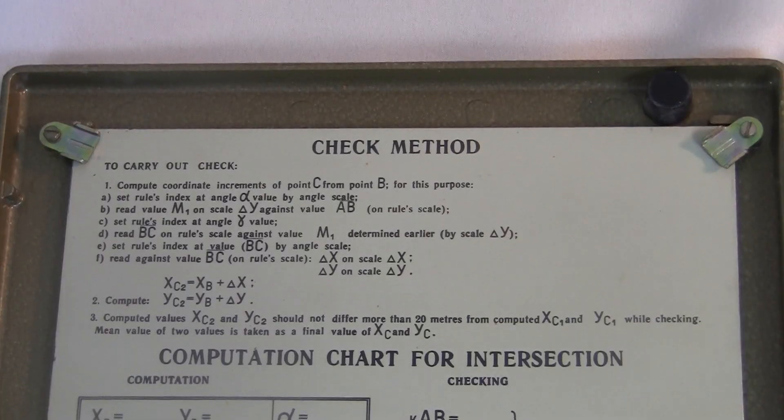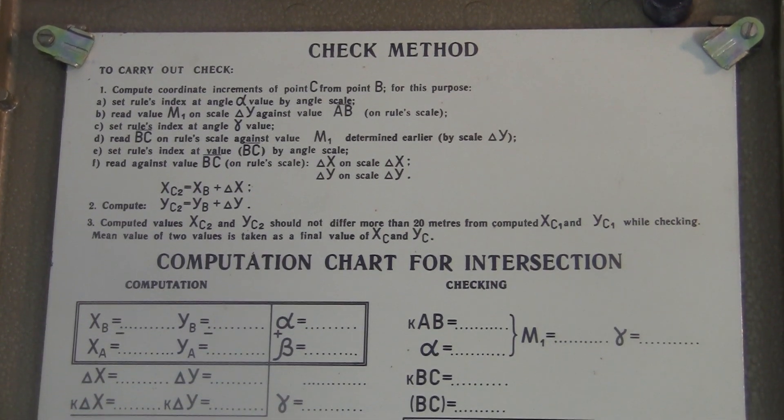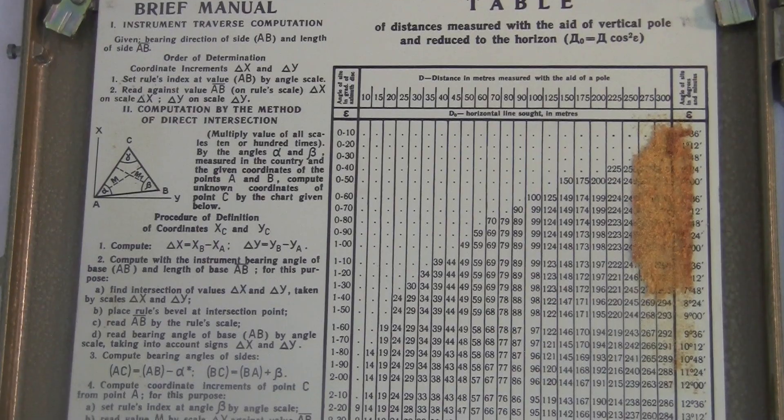Over here is the Check Method Plate, where you can write down some intermediate steps while you're computing. And on the back of that is another chart and sort of a quick reference of instructions.